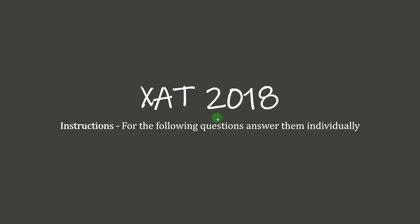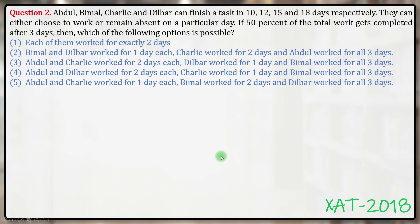Hello everyone, let's get on with this question of XAT 2018. This is a simple question from Time and Work. Abdul, Bimal, Charlie, and Dilber can finish a task in 10, 12, 15, and 18 days respectively.